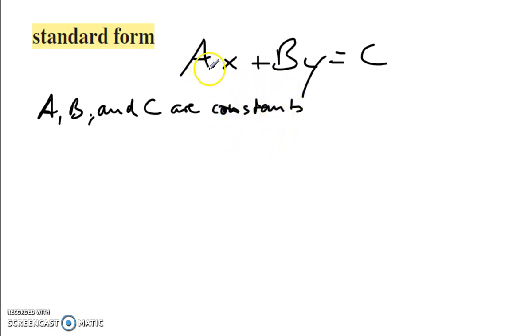For example, I could have 2x plus 3y is equal to 12.